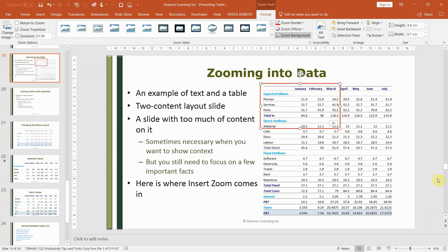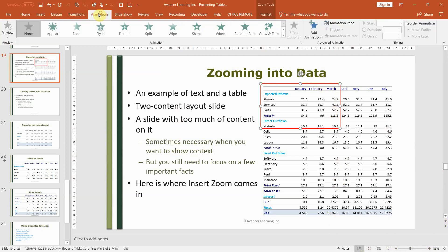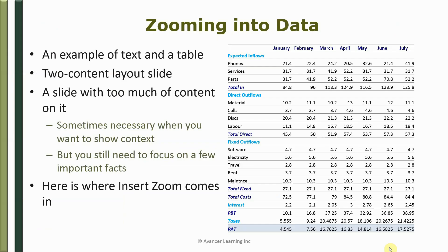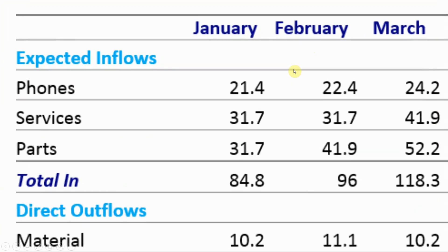I'll go back to Zoom Tools, enable 'Return to Zoom,' and apply an animation that zooms out. Here's what that looks like: I first show my slide for context, then I click here to zoom into that part of the slide — the background has blown out a bit so it looks a little grainy and blurred since we've zoomed to a large extent — and then clicking again it goes back.